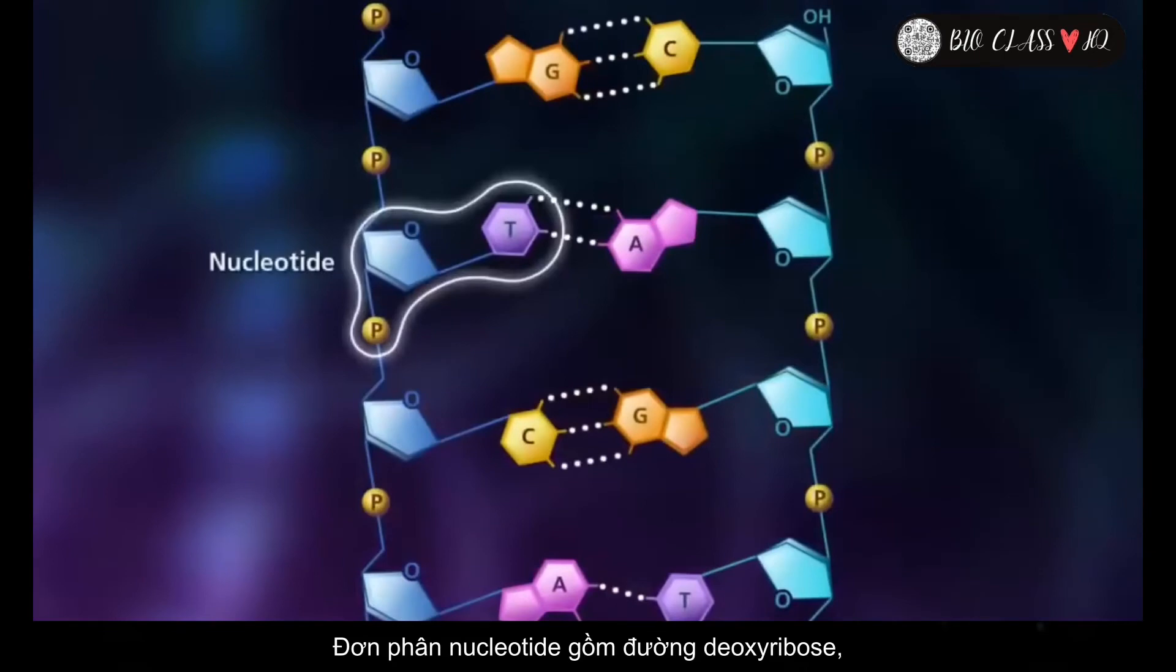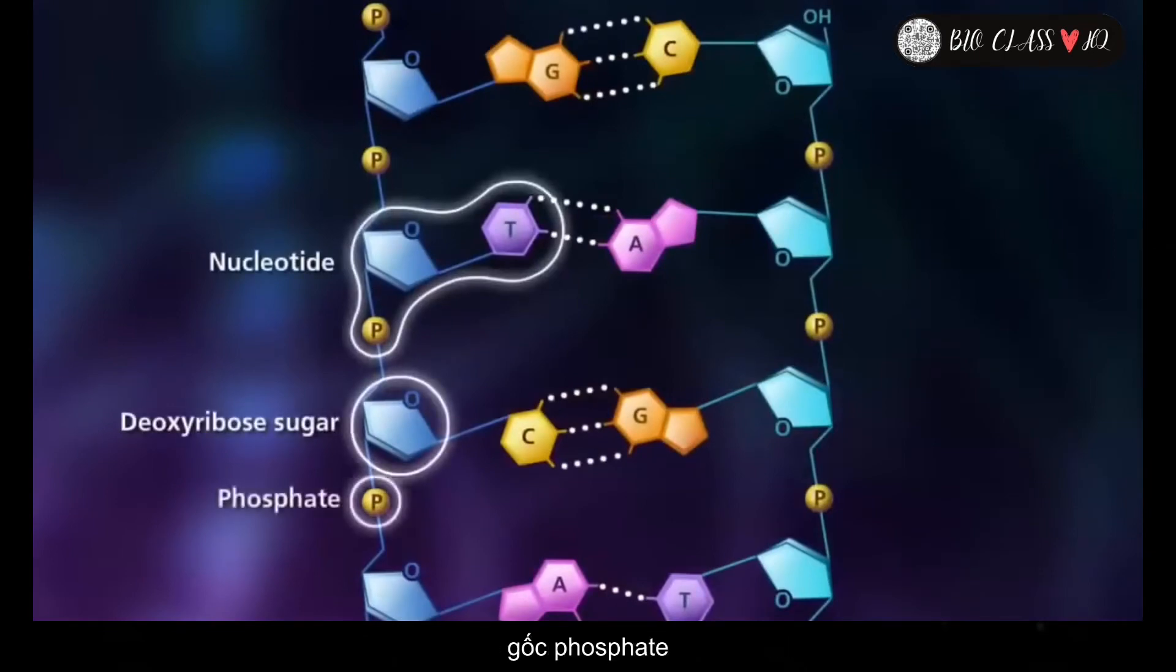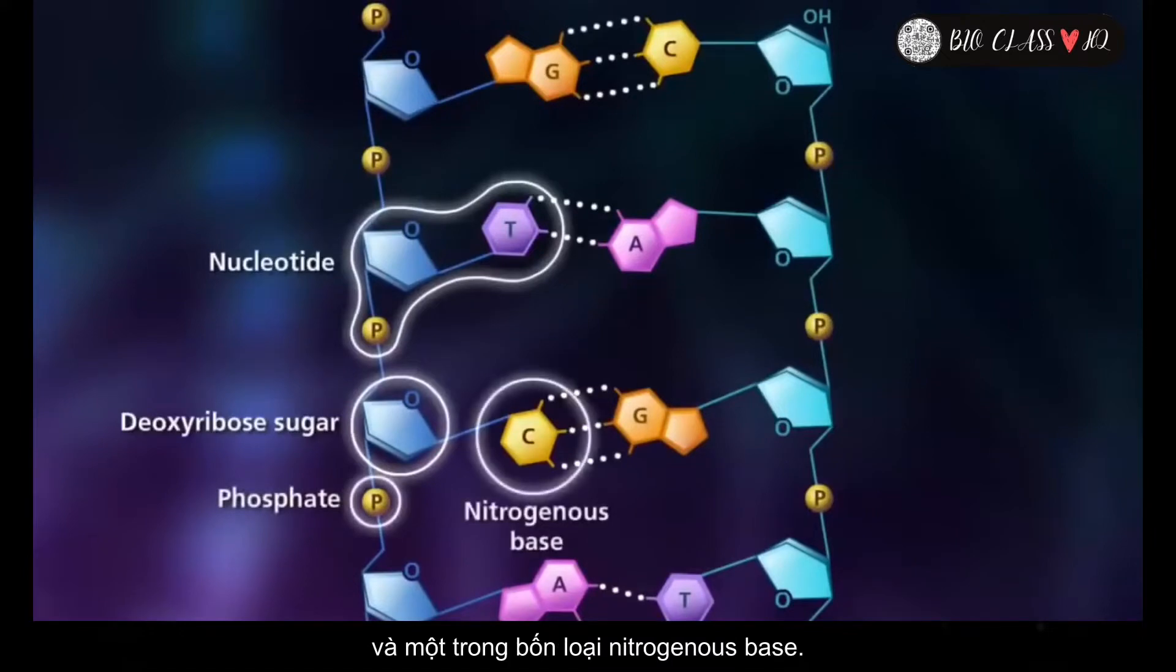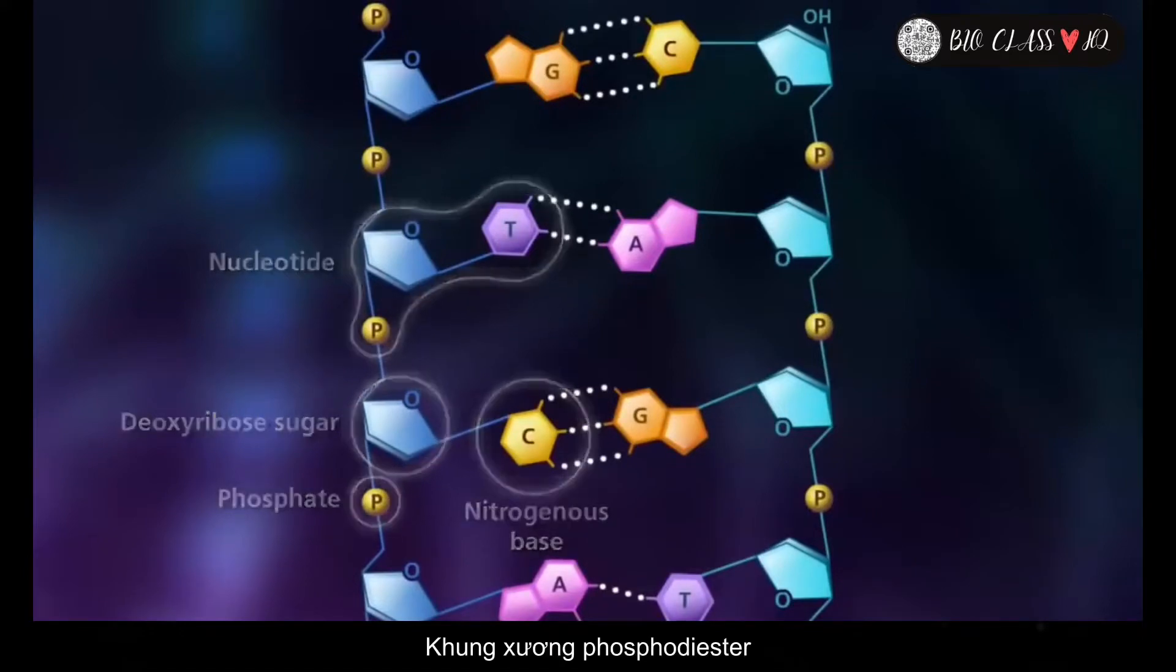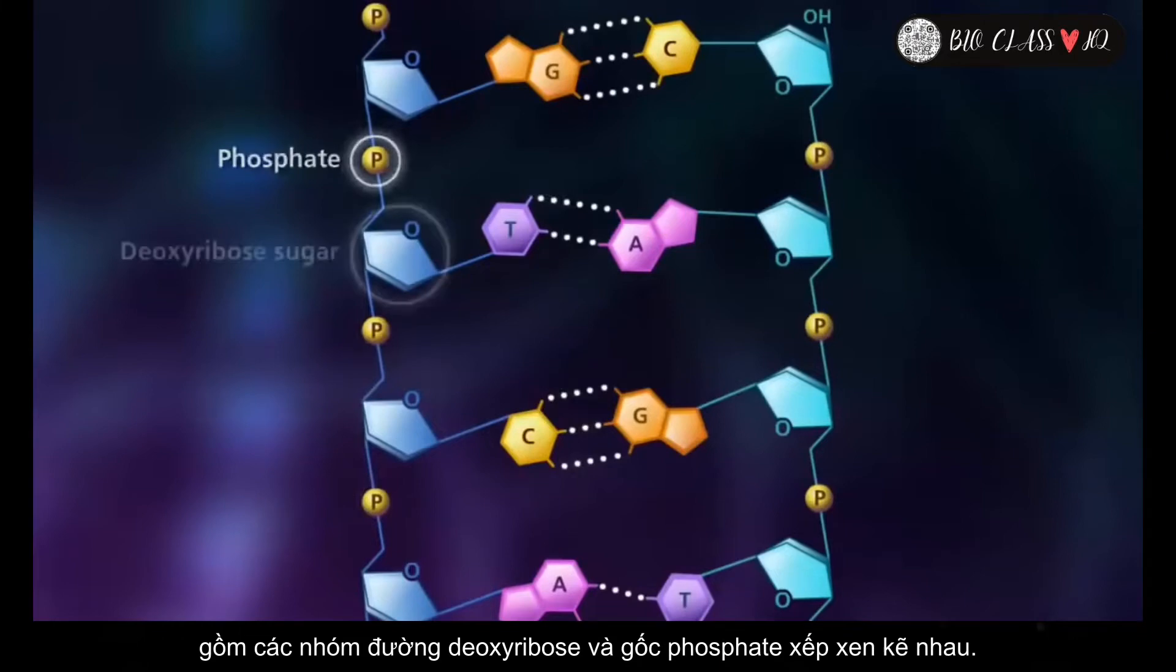Nucleotides are molecules that consist of a deoxyribose sugar, a phosphate, and one of four nitrogenous bases. The phosphodiester backbones consist of alternating sugar and phosphate groups.